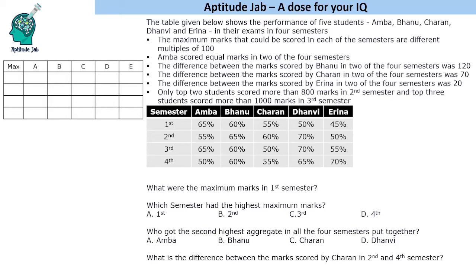Hello everyone, welcome to Aptitude Jab. This set gives us a table which says that 5 students appeared in an examination in 4 semesters and the maximum marks that could be scored in each of these semesters are different multiples of 100. Maximum marks are different and we are given the percentage of marks scored by these students in different semesters.